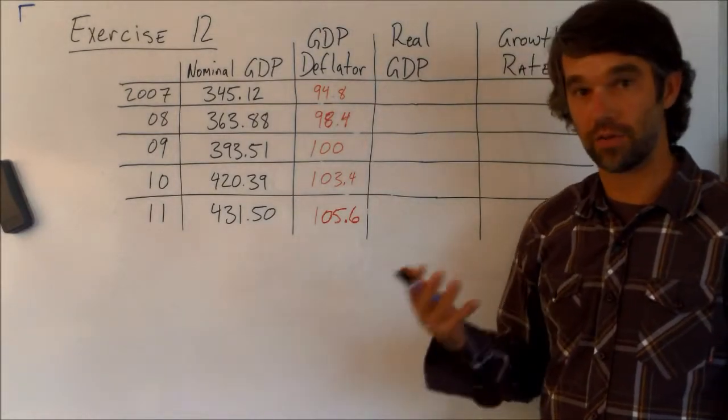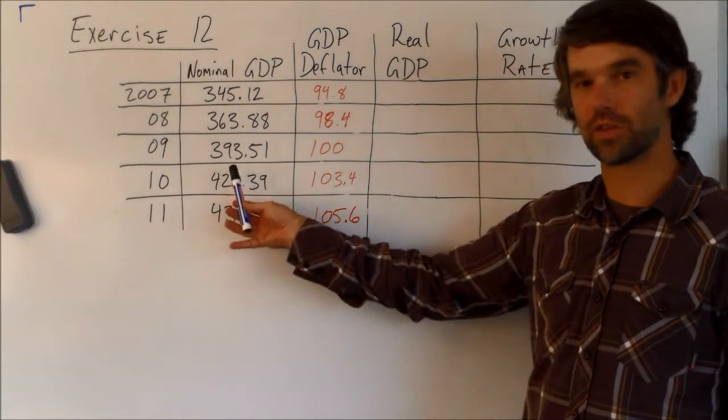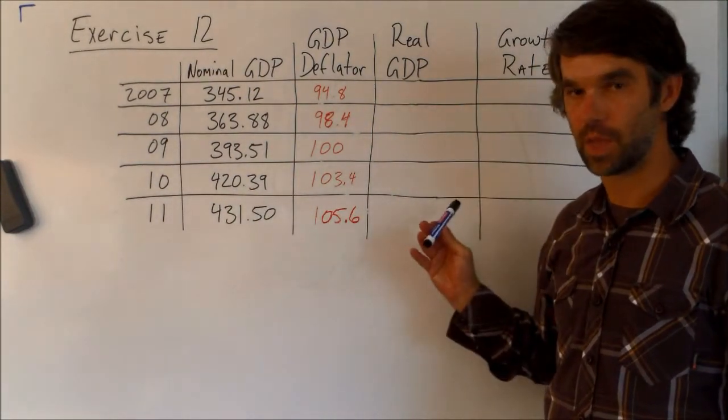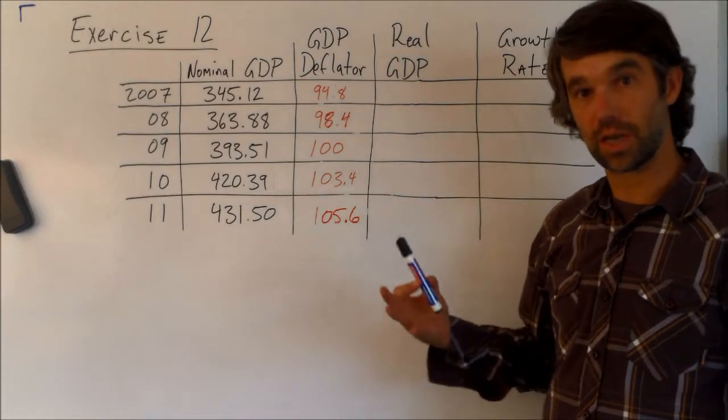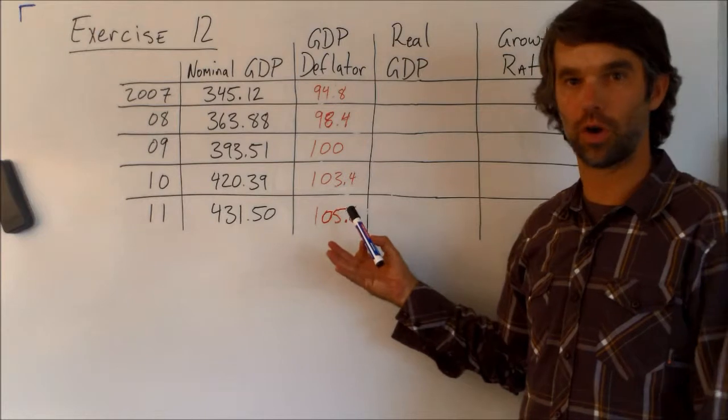So to do that, the first step is we have to get these nominal GDPs, you're given five of them, and we have to turn them into real GDPs. When we do that, obviously we're going to divide the nominal GDP by the deflator, that's the formula.